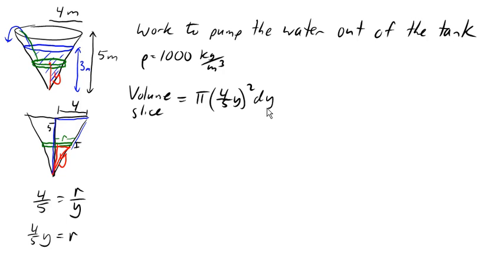So putting those together, the mass of the slice will be density times the volume. So 1,000 times pi times 4 fifths Y squared dy.